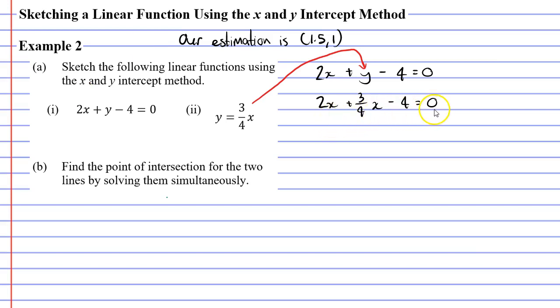Let's now solve this equation. I really hate fractions so the first thing I want to do is get rid of the denominator of 4. I'm going to do that by multiplying by 4 to every single term. This will get rid of my fraction. 2x times 4 is 8x. Because I've cancelled the 4 I'm left with 3x. So 8x plus 3x minus 16 equals 0.